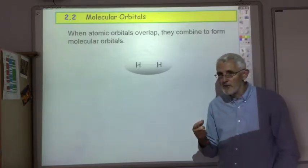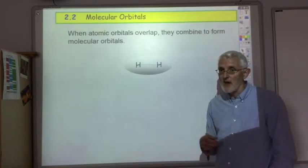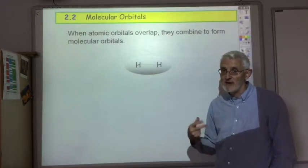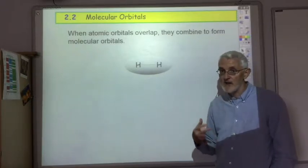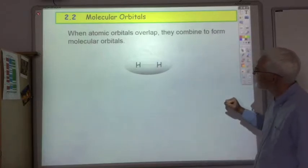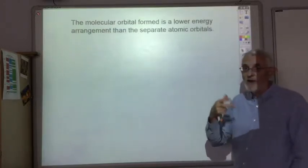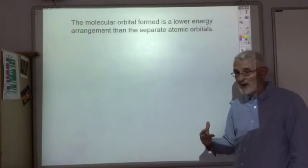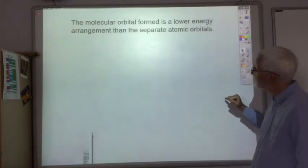The atomic orbital is the area of space where you're likely to find an electron in an atom, and the molecular orbital is the area of space where you're likely to find the bonding electrons in a molecule. The molecular orbital is more stable, which means it has a lower energy than individual atomic orbitals.